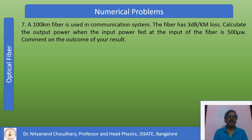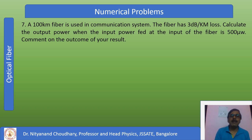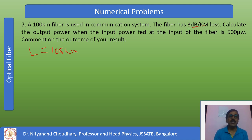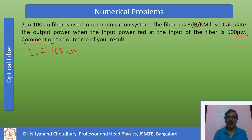Problem number 7, the last problem, is again on fiber loss. A 100-kilometer fiber is used in a communication system with a loss of 3 dB per kilometer. Calculate the output power when the input power is 500 microwatts, and comment on your answer. The length L = 100 km must remain in kilometers.